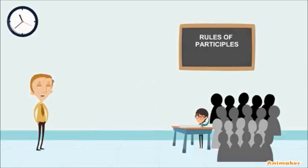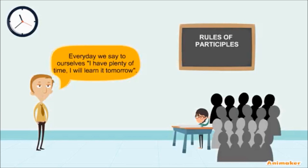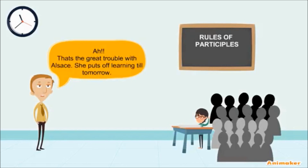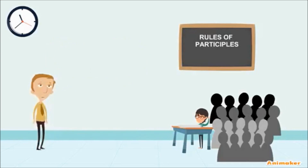Then M. Hamill says, "I won't scold you, little Franz. See how it is. Every day we say to ourselves, I have plenty of time — I'll learn it by tomorrow. That's the great trouble with Alsace. She puts off learning till tomorrow." M. Hamill reminds the students that the Germans would laugh at them by saying, "What kind of a Frenchman are you when you can neither speak nor write your own language?" M. Hamill also blames the parents for not sending their children to school, but putting them to work on a farm or at the mills. He also blames himself for asking the students to water the floors, and when he went fishing, he gave them a holiday.